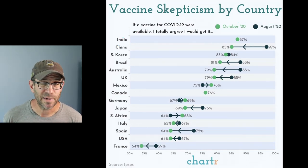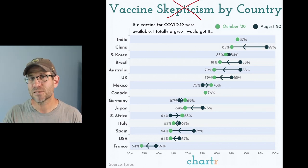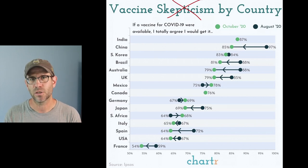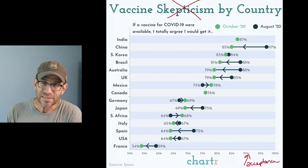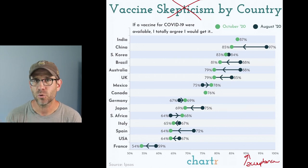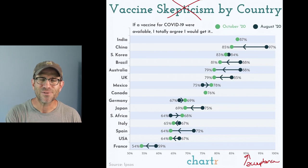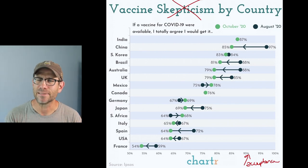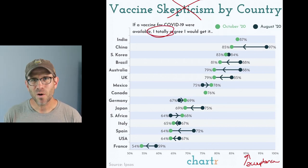What don't I like about this figure? First, the data do not measure skepticism — they measure people's willingness to receive the vaccine. Vaccine acceptance or willingness by country would have been a better title. If we wanted to look at skepticism, we'd need to flip the x-axis and do 100 minus whatever value is shown, and sort countries by skepticism. As it is, it's sorted by acceptance. So they tried to tell a story but I think they got the story backwards.